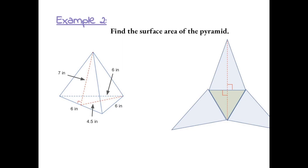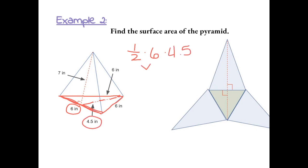Find the surface area of the pyramid. This pyramid has a base that is a triangle. We start by finding the area of the base. We do one-half times the base of the triangle, which is six, times the height, which is four point five. One-half times six gives us three, then three times four point five gives us thirteen point five for the area of the base of the pyramid.